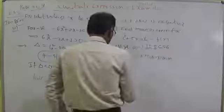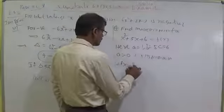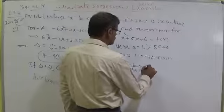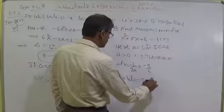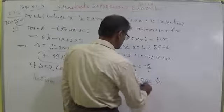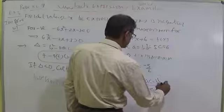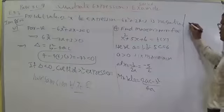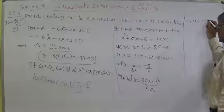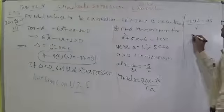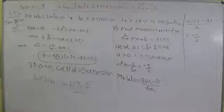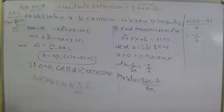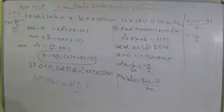f(x) is minimum. The formula gives x equals minus b by 2a, that is minus 5 by 2. Minimum value equals 4ac minus b² divided by 4a: substitute — 4 times 1 times 6 equals 24, minus b² means minus 25, by 4a means by 4. So 24 minus 25 equals minus 1, giving minimum value as minus 1 by 4.